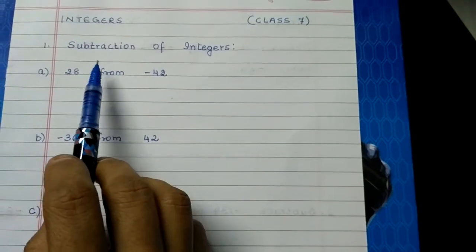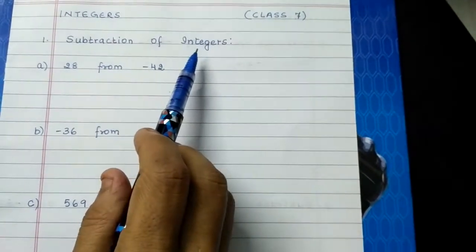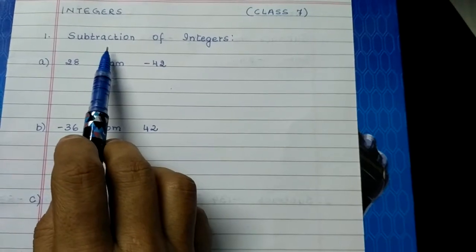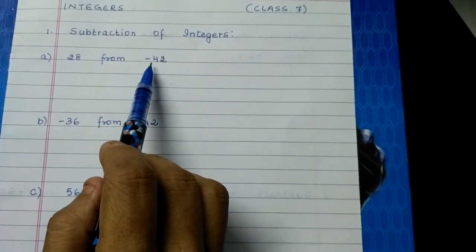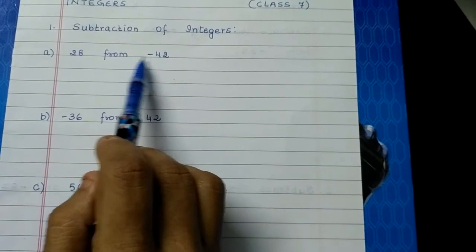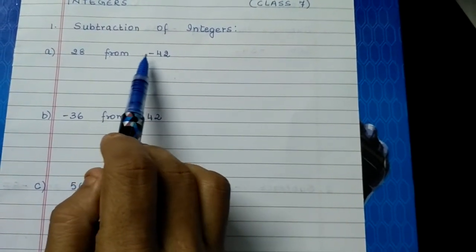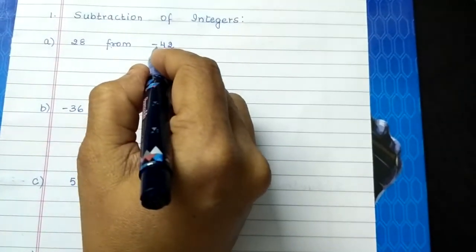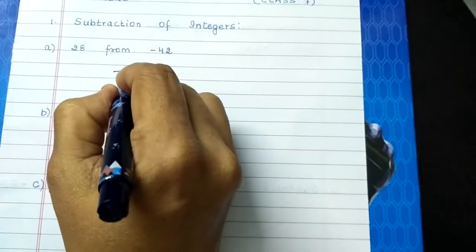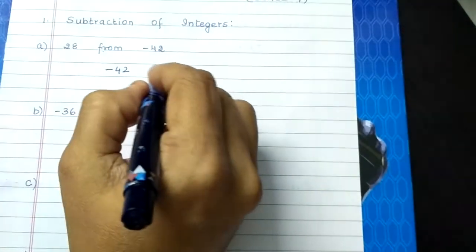So children, today we are going to learn subtraction of integers. Subtract 28 from minus 42. Now remember children, in subtraction, whatever number comes after from, that only should be written first. So this number is minus 42 and this number is 28.